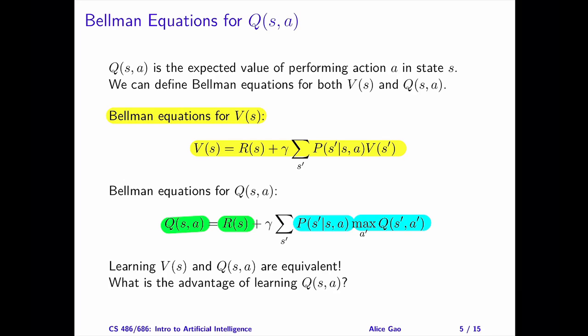Since we have the Bellman Equations for both V and Q, learning the two kinds of values are equivalent. If we have an algorithm for learning the V values, we can convert it into an equivalent one learning the Q values.